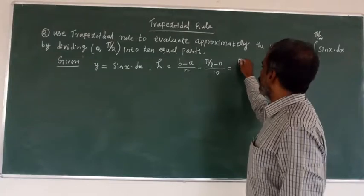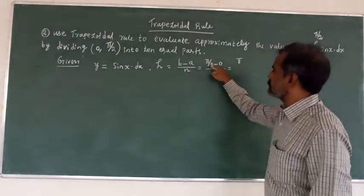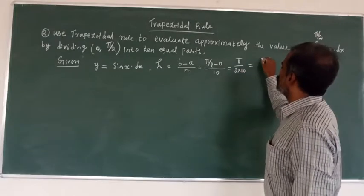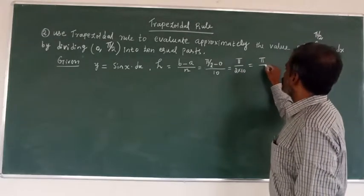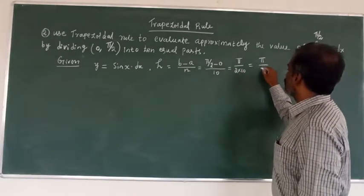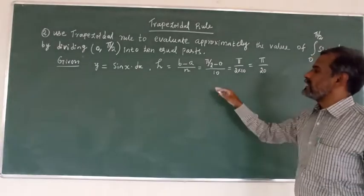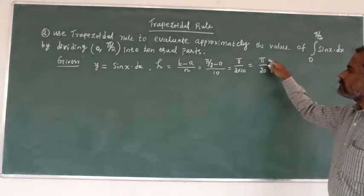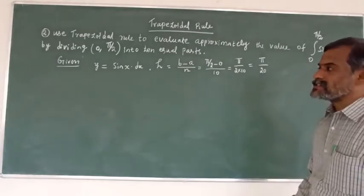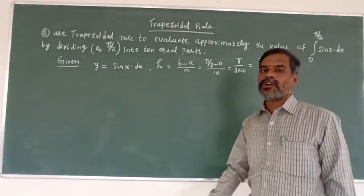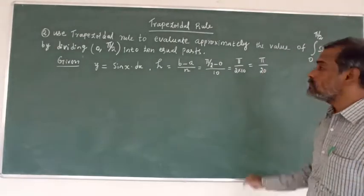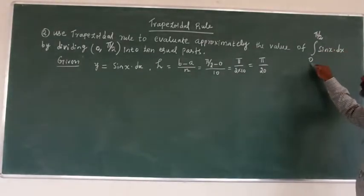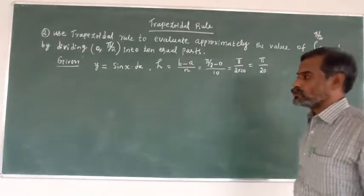So h equals π/2 divided by 10, which gives us π/20. This is the value of h. The interval between x values is π/20, and we have to start from x = 0 up to x = π/2.